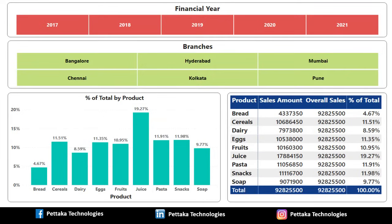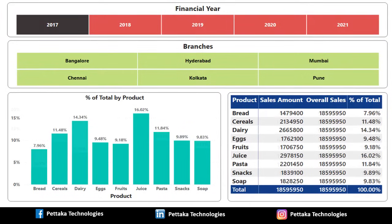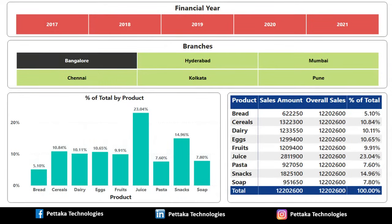If we interact with the slicer based on the selection, percentage of total will get differ. Let me click on 2017. Once I click 2017, you can see the difference in percent of total in both chart and table. In the same way if I click on Bangalore in the branch slicer, percentage of total data got changed once again.